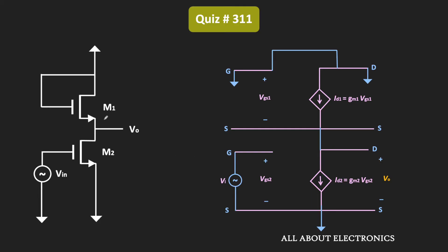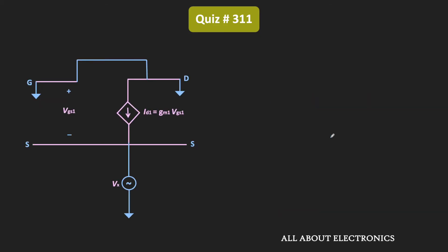The source of MOSFET M1 is connected to the drain terminal. Since MOSFET M1 is a diode-connected transistor, it can be replaced by an equivalent resistance — the resistance seen from this side. To find the equivalent resistance, let us apply a test voltage Vx to M1 and find the test current Ix flowing through this voltage source. The ratio of Vx and Ix will give us the equivalent resistance Rx.